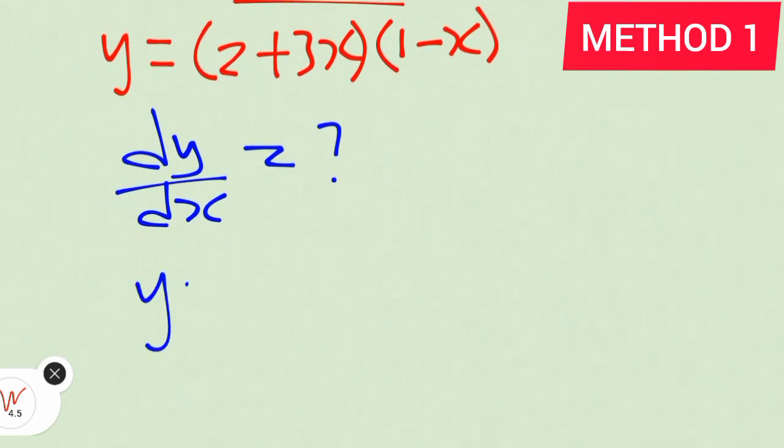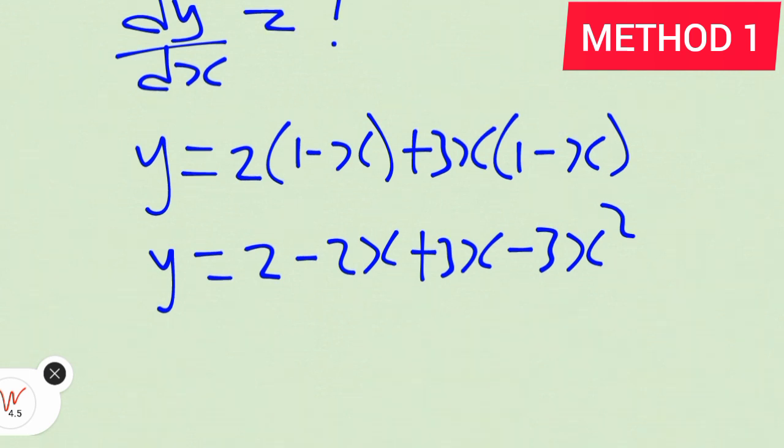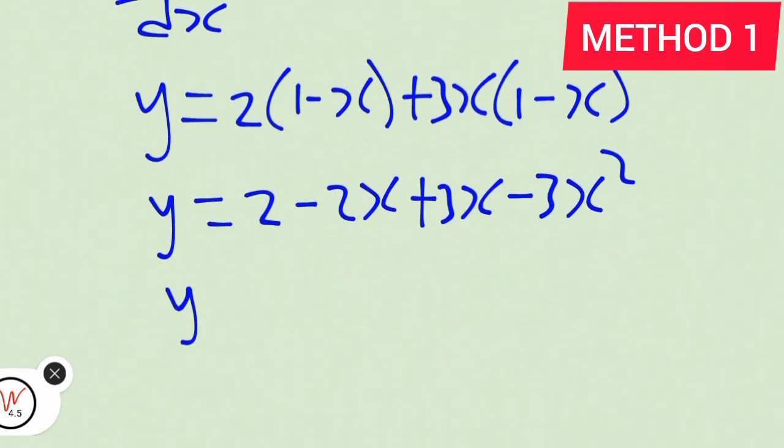Now let's expand this bracket. That means y equals 2 times (1 - x) plus 3x times (1 - x). Therefore, we have y equals 2 - 2x + 3x, that is x minus 3x squared.